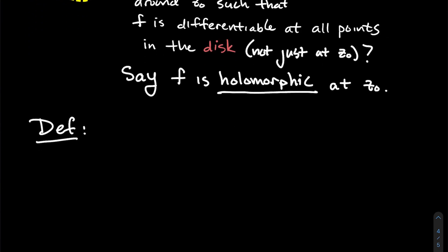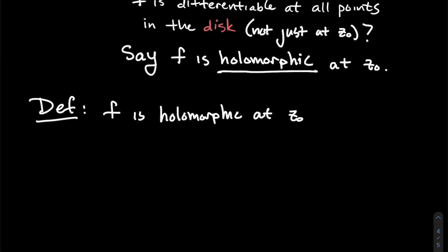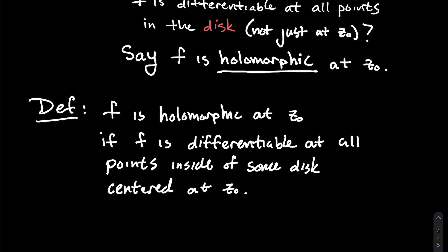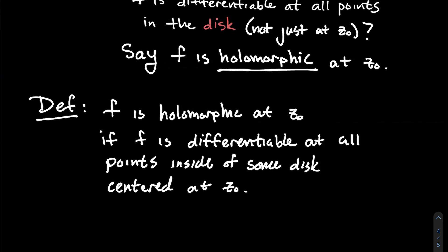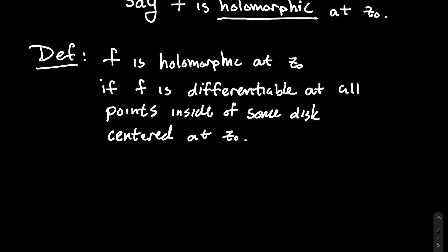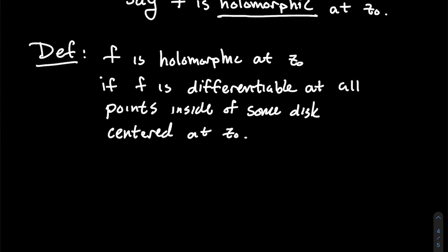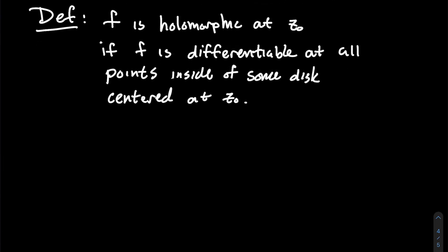Let's write down this definition more formally. We say f is holomorphic at z₀ if f is differentiable at all points inside some disk centered at z₀. By the way, another word for holomorphic you might encounter is analytic. Some books introduce them separately and then prove they're equivalent. I'm choosing holomorphic to follow the notes I've been using, but we'll talk about analytic a little later.